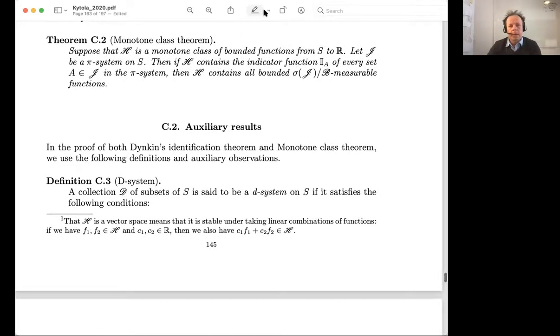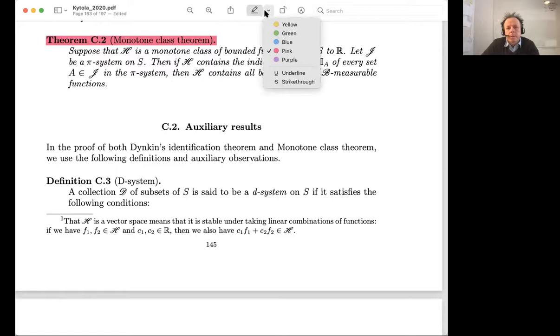It's called the monotone class theorem, often attributed to Sierpinski, the Polish mathematician. The statement is: if you have a monotone class of functions which contains the indicators of every set in some pi-system, then this monotone class actually contains all measurable functions